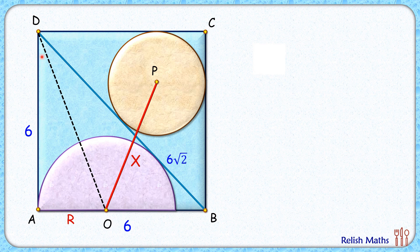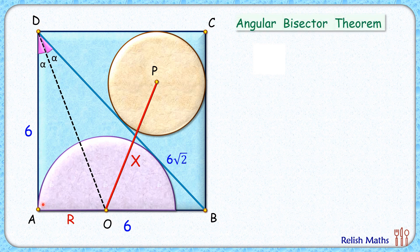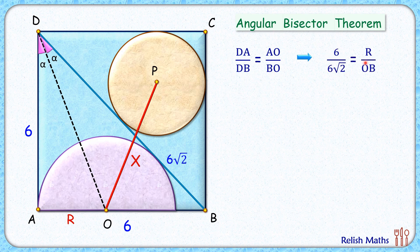By theorem, the external point D and the center, the line joining them will bisect this angle D. So if this angle is α degrees, then this angle will also be α degrees. In this triangle DAB, applying the angular bisector theorem, we get the ratio of sides: DA upon DB equals AO upon BO. Putting the values, DA is 6 and DB is 6√2, so we get 6 upon 6√2 equals r upon OB.